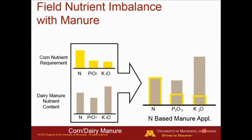In a nitrogen-based manure application rate, we're going to be matching our manure supply with the nitrogen demand by the corn crop. By matching the nitrogen rates demanded by the crop, we're going to end up over-applying the amount of phosphorus and potash required by the crop. This is a problem where we're going to end up building up phosphorus in the soil, which is probably going to stay there for a long time.